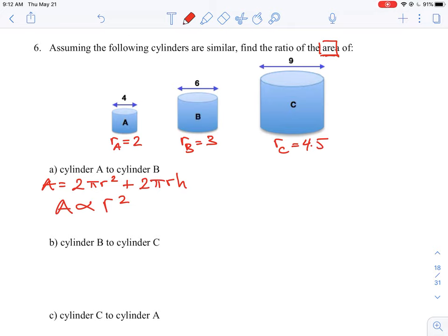So that's key in this question, because what it lets us do is, instead of having to calculate anything the long way, and remember, we don't even know the height, we know area is a function of the square of a radius. So in this first case here, we can say the radius of A to the radius of B, which is what we're asked to find,